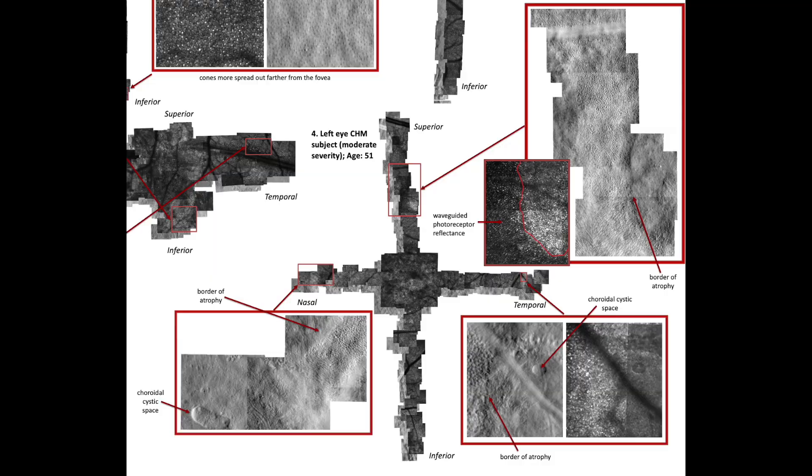The atrophy regions are larger in the patient right below, beginning to manifest in the superior and nasal arms as well. In addition, the atrophied regions are closer in eccentricity to the fovea, which reflects the clinical nature of the disease, which begins with vision loss in the periphery and gradually leads to greater loss of vision.